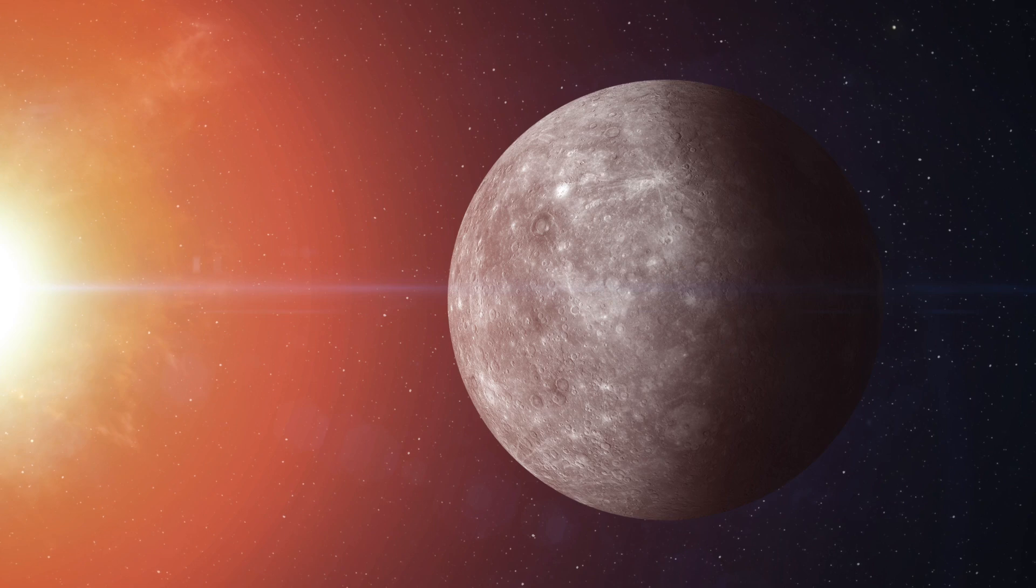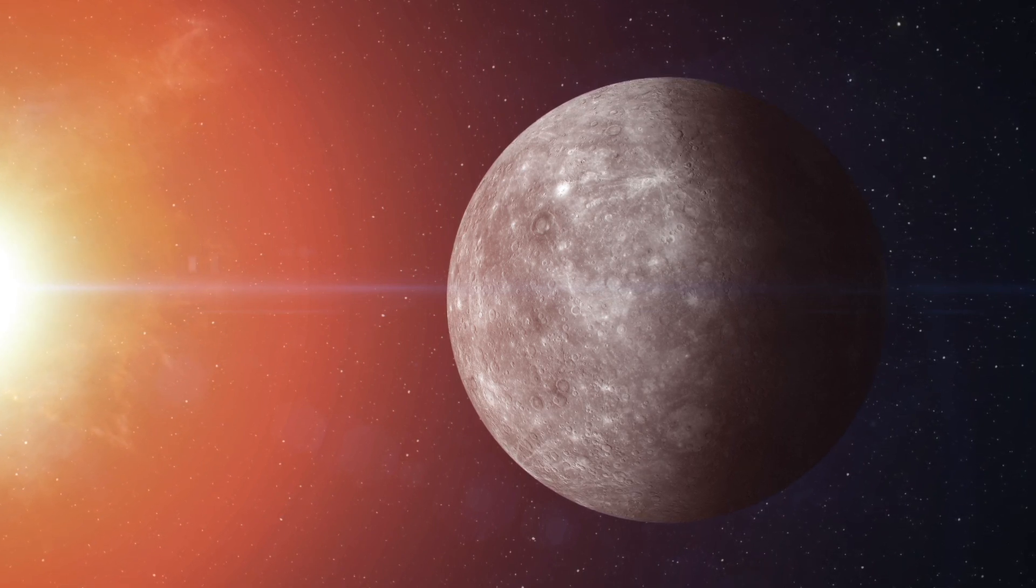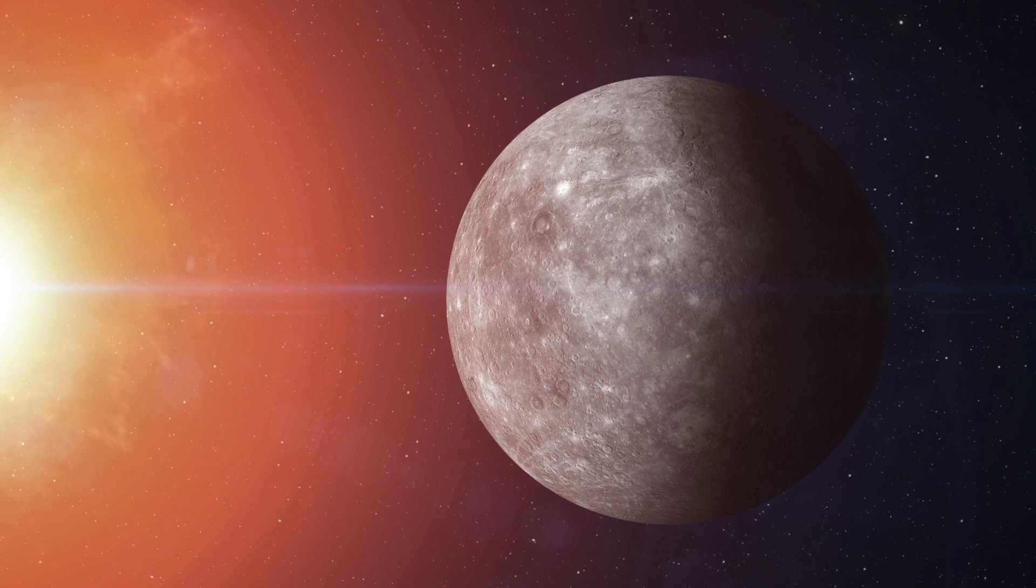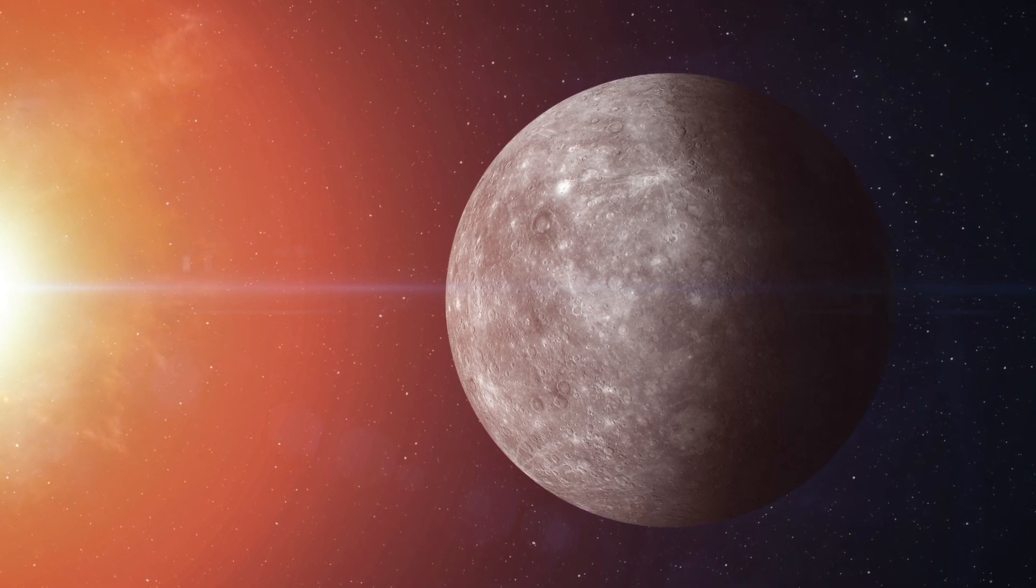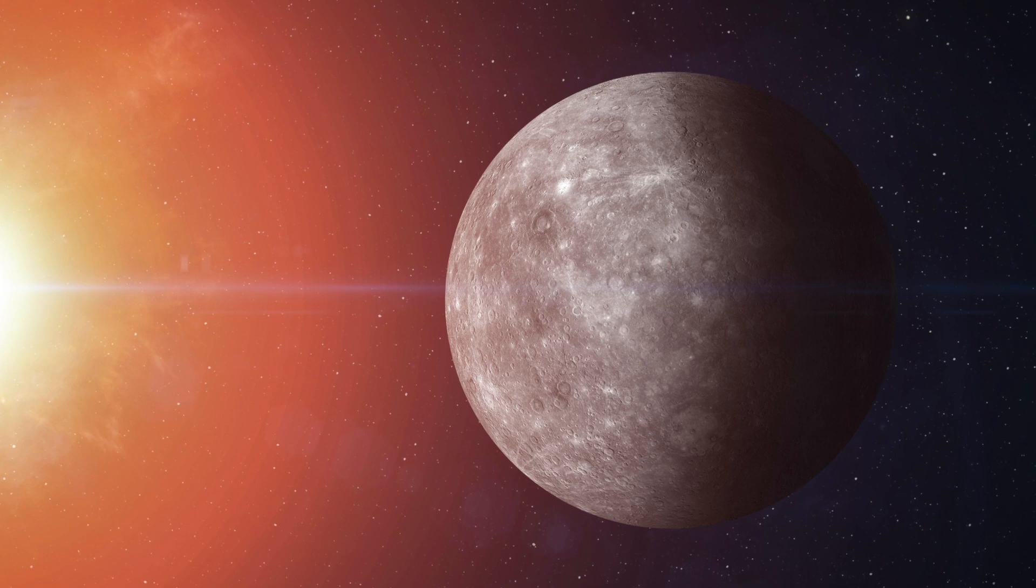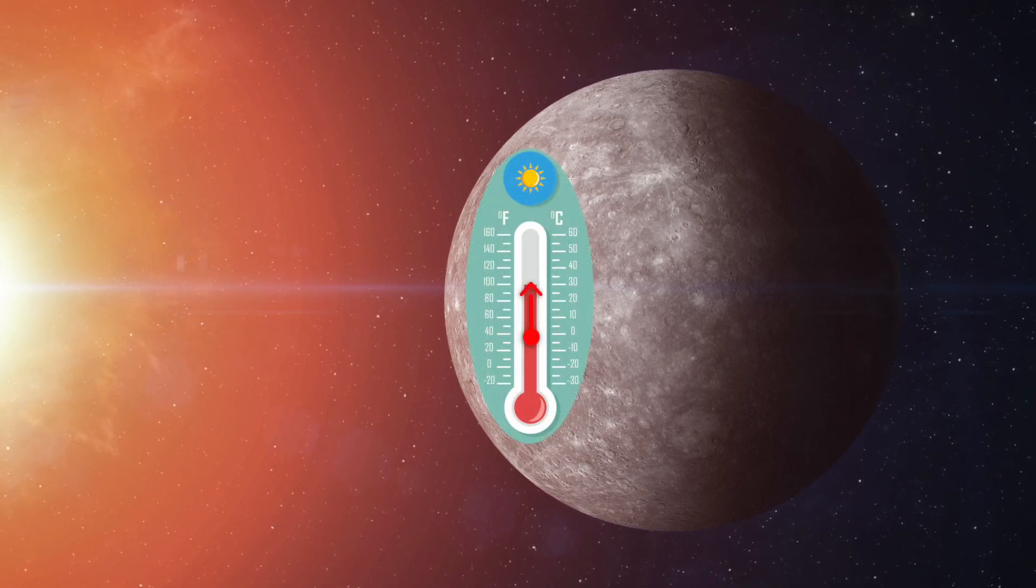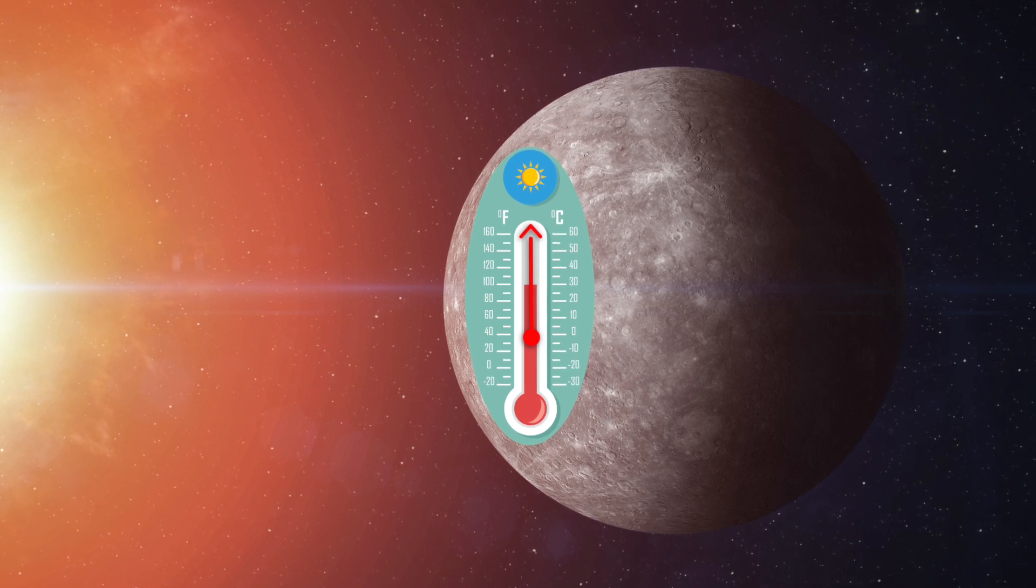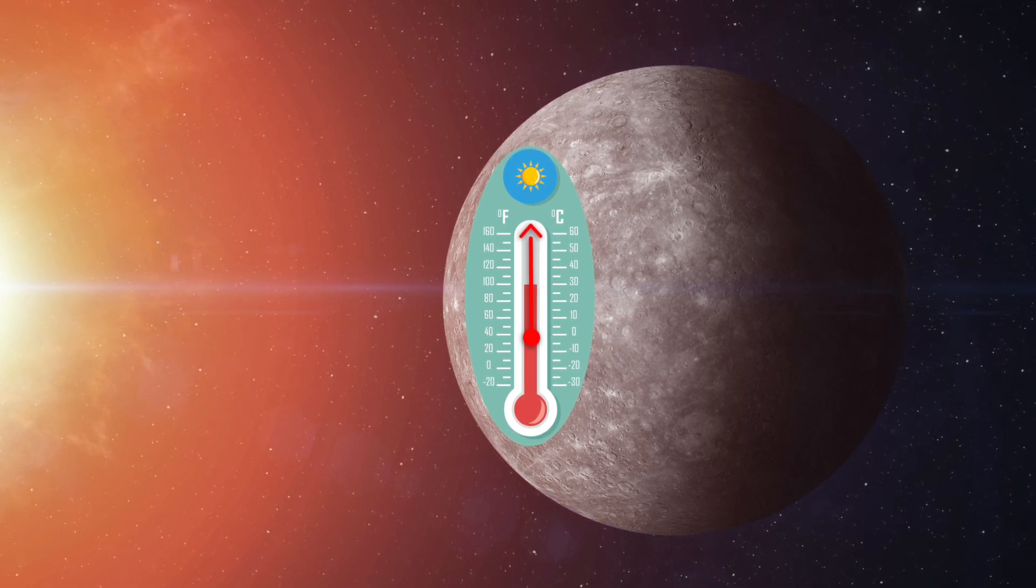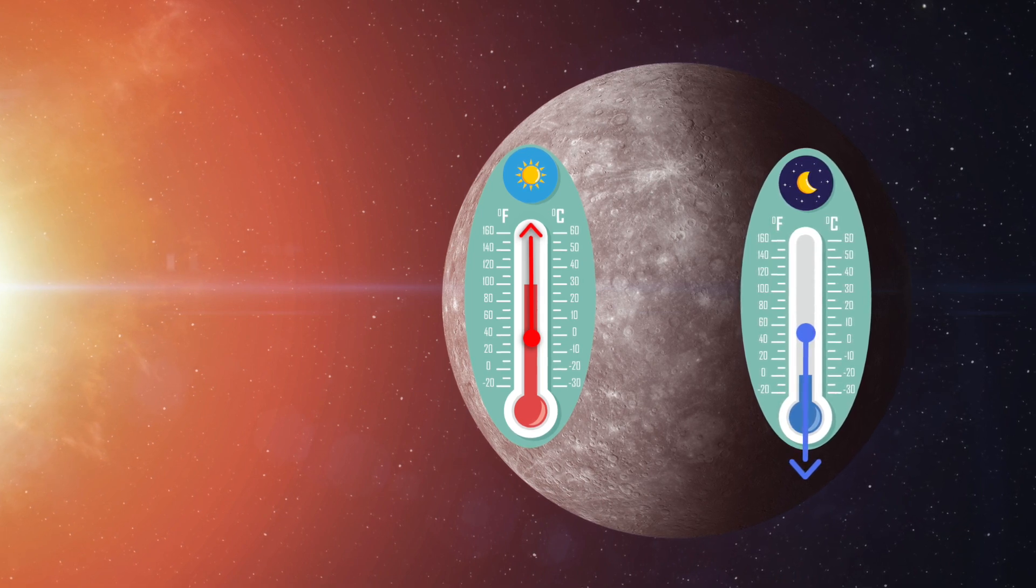Even though it's the closest to the Sun, Mercury is not the hottest planet. Without an atmosphere, the planet experiences extreme temperature changes, so it gets very hot and very cold. The side of Mercury that is facing the Sun can reach over 400 degrees Fahrenheit, and the side facing away can drop to almost negative 247 degrees Fahrenheit.